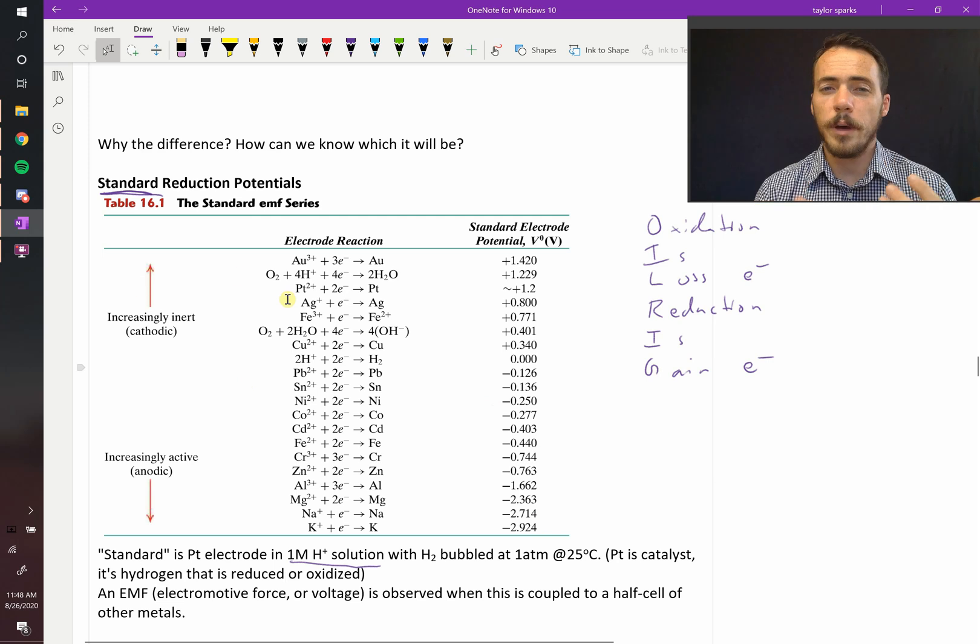So we call these things increasingly inert. So you've probably heard of the noble metals, platinum, gold, silver. These things are relatively inert, meaning they want to form the regular metal. They do not want to dissolve. If you reversed this reaction and wrote it as an oxidation, gold dissolving into gold ions, it would be a negative voltage. And that you would have to apply that voltage for it to happen. But other things, they are increasingly reactive or active. Like, you've probably seen demonstrations where somebody takes sodium and they put it in water and it rapidly reacts with the water pretty violently to form sodium plus ions. Because, again, if you switch this, sodium going into those would be a large positive number. Therefore, it would be spontaneous.